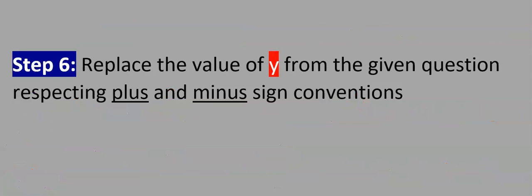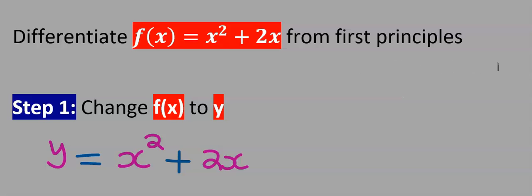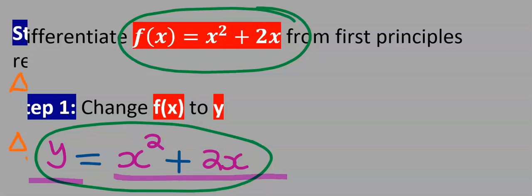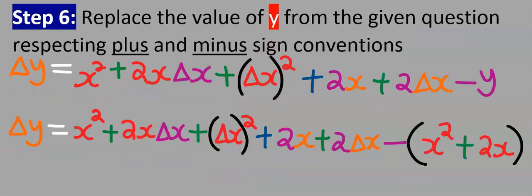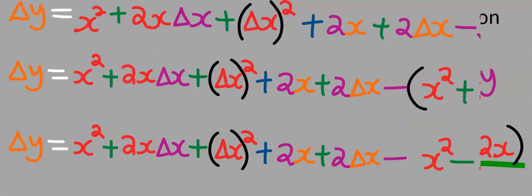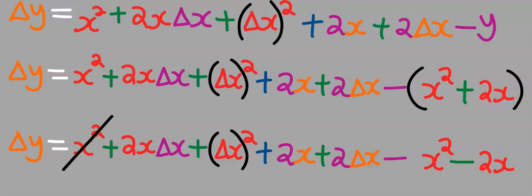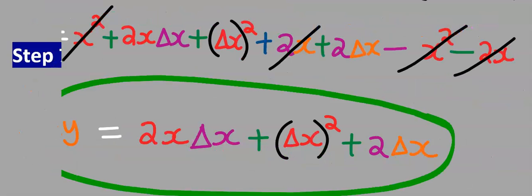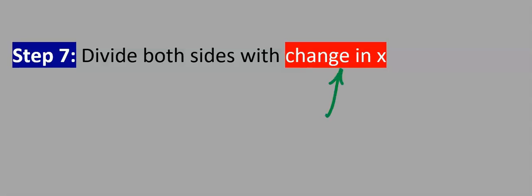Step number six: replace the value of y from the given question. From the given question, instead of y I'm going to write x² + 2x. Respecting this negative, we expand the bracket. With the expansion, plus x² will cancel minus x² and plus 2x will cancel minus 2x, so we are left with the simplified expression.